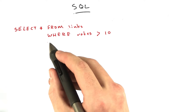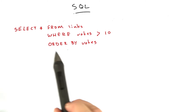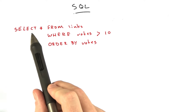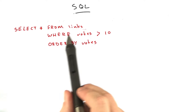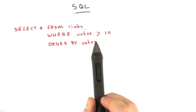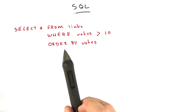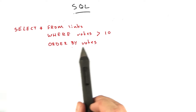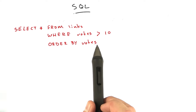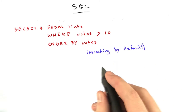Let's add a new type of clause — the ORDER BY clause — which says to sort the results. I've got SELECT * FROM links, we're familiar with that, WHERE votes is greater than 10, and we're familiar with that. Additionally, all of those rows that you're returning, order them by the number of votes. By default, the votes are in ascending order.